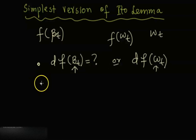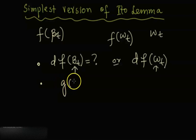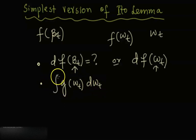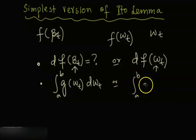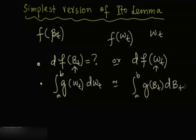We are also going to see how we can compute the integral of a function depending only on Brownian motion with respect to Brownian motion — that is, the Ito integral. So with the help of the simplest version of Ito Lemma, we will be able to compute this differential and calculate this Ito integral.